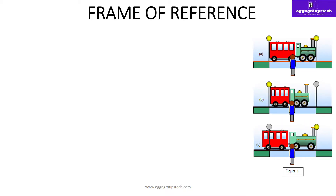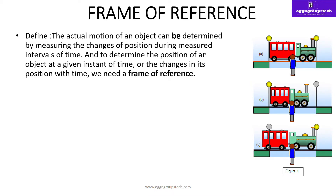Now we are going to start a new topic called frames of reference. Frames of reference کا مطلب ہے کہ ہم کسی کو refer کر کے اس object کا motion calculate کرتے ہیں۔ For example, consider a train moving in a forward direction. If I take the frame of reference inside the train, for the person sitting inside the train, the objects inside are at rest.